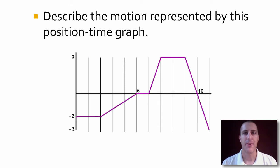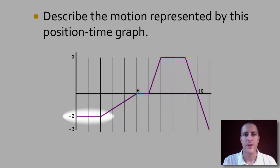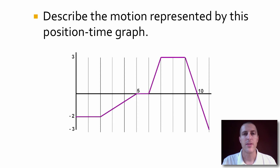Let's look at this position time graph and talk about what is represented by this graph. What motion is described here? To start off with, the horizontal section is showing us that there is no motion. Whenever you have a horizontal line on a position time graph, there is no motion. You're stationary. Your position is not changing.